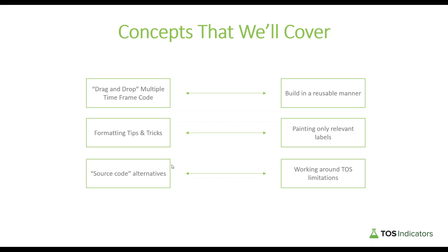The last concept we're going to discuss is finding an alternative to the built-in TTM Squeeze function in thinkorswim and instead using source code alternatives. The reason we have to do this is a nuance of thinkorswim — if you try to reference the TTM Squeeze indicator inside of an if-else clause that also has aggregation periods, that tends to lead to false squeeze signals. The TTM Squeeze doesn't actually return the value or squeeze alert you would expect. So instead, we go directly to writing the source code without referencing the built-in TTM Squeeze, and that works the way we expect it to.